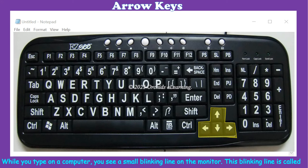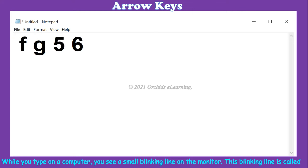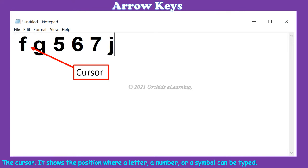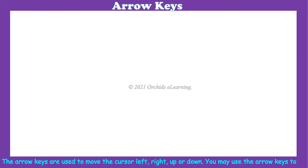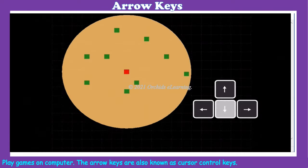Arrow keys: while you type on a computer, you see a small blinking line on the monitor. This blinking line is called the cursor. It shows the position where a letter, a number, or a symbol can be typed. The arrow keys are used to move the cursor left, right, up, or down. You may also use the arrow keys to play games on a computer.